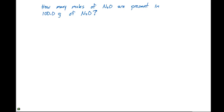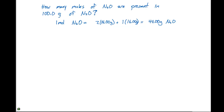Now that we've established the rules for calculating formula weights, moles, Avogadro's number, and everything like that, we can perform many calculations around these concepts. The first example problem we're going to look at is: how many moles of N2O are present in 100.0 grams of N2O? We know that one mole of N2O equals 2 times 14.00 grams plus 1 times 16.00 grams, or 44.00 grams of N2O.